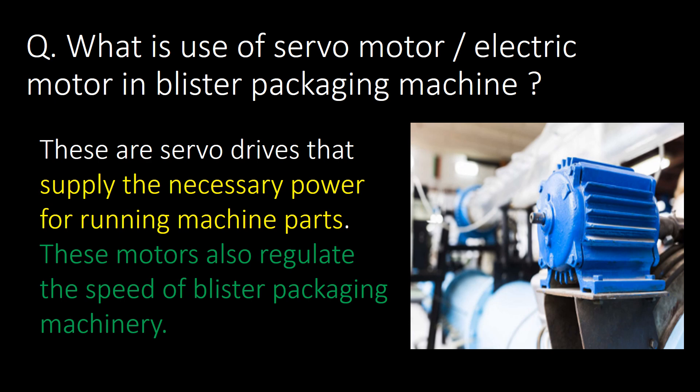What is the use of a servo motor or electric motor in a blister packaging machine? These are servo drives that supply the necessary power for running machine parts. These motors also regulate the speed of blister packaging machinery.